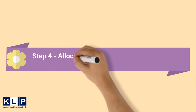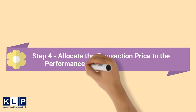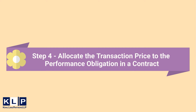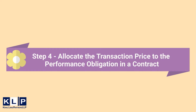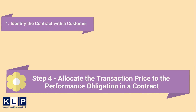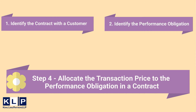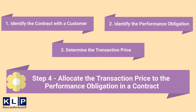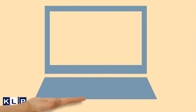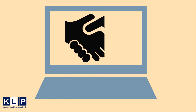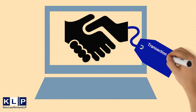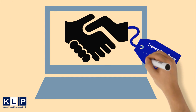Welcome to episode 5 of the IFRS 15 Made Easy series. So far we have learnt how to identify a contract, its performance obligations, and how to determine the transaction price. In this episode, we will go through how to allocate the transaction price to the performance obligations in a contract.